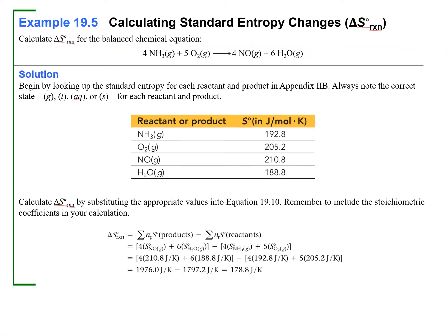Let's work a couple of problems, because we get grades in chemistry for making accurate numerical predictions, not just discussing conceptual ideas. This question asks us to calculate the standard change in entropy of reaction for: 4 NH₃(g) + 5 O₂(g) → 4 NO(g) + 6 H₂O(g). All species are in the gas phase.